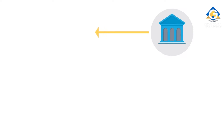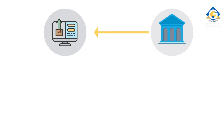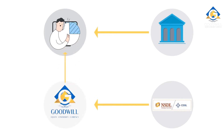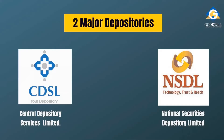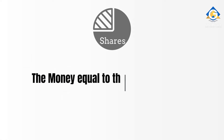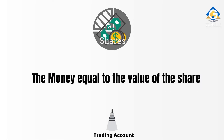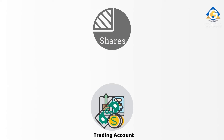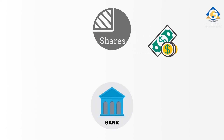Now Rahul understood the process of buying shares through a stock broker. First, money is transferred from his linked bank account to his trading account, and the purchase of shares happens through his stock broker. From the depository through the DP, the shares are credited to his Demat account electronically. If he wants to sell the share in his Demat account, then the money equal to the value of the share will be directly credited to his trading account. If he has some shares that give out dividend, those dividends are credited directly to the linked bank account.